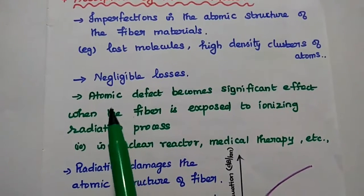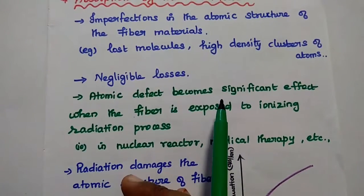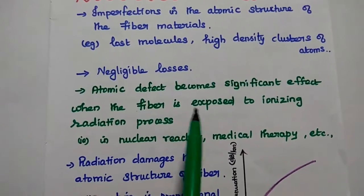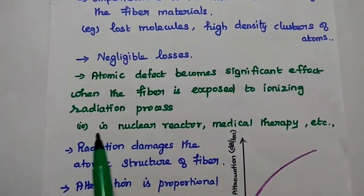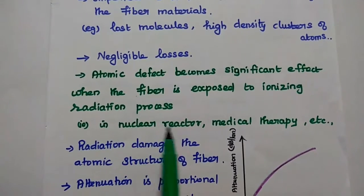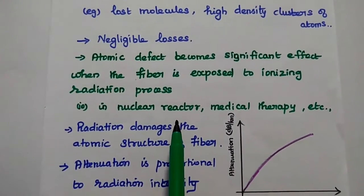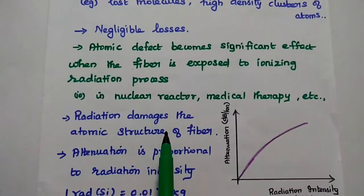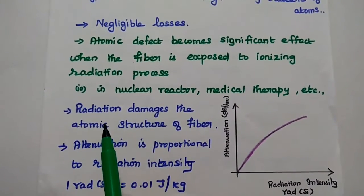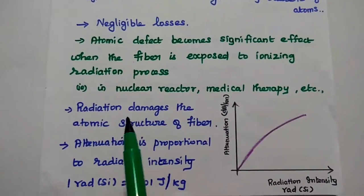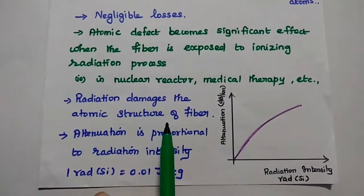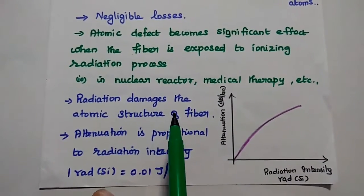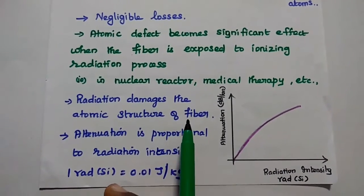But at the same time, this atomic defect becomes significant when the fiber is exposed to ionizing radiation process, in applications like nuclear reactor, medical therapy, etc. In that application, this ionizing radiation damages the atomic structure of fiber. At that time, the loss becomes very high, in the considerable range.